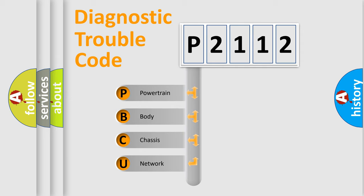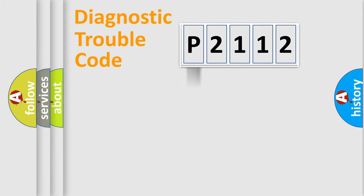We divide the electric system of automobiles into four basic units: powertrain, body, chassis, and network. This distribution is defined in the first character code.